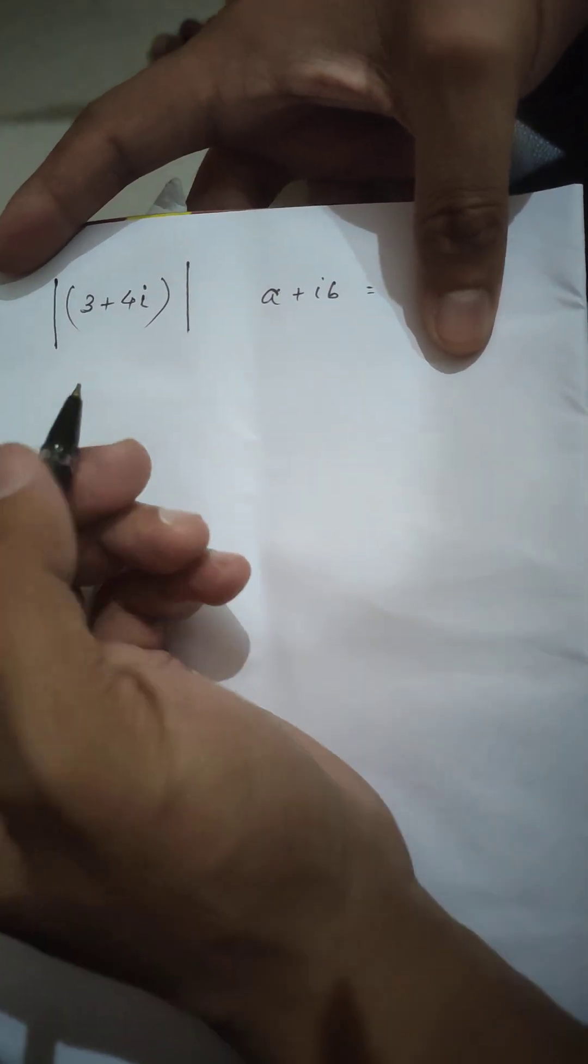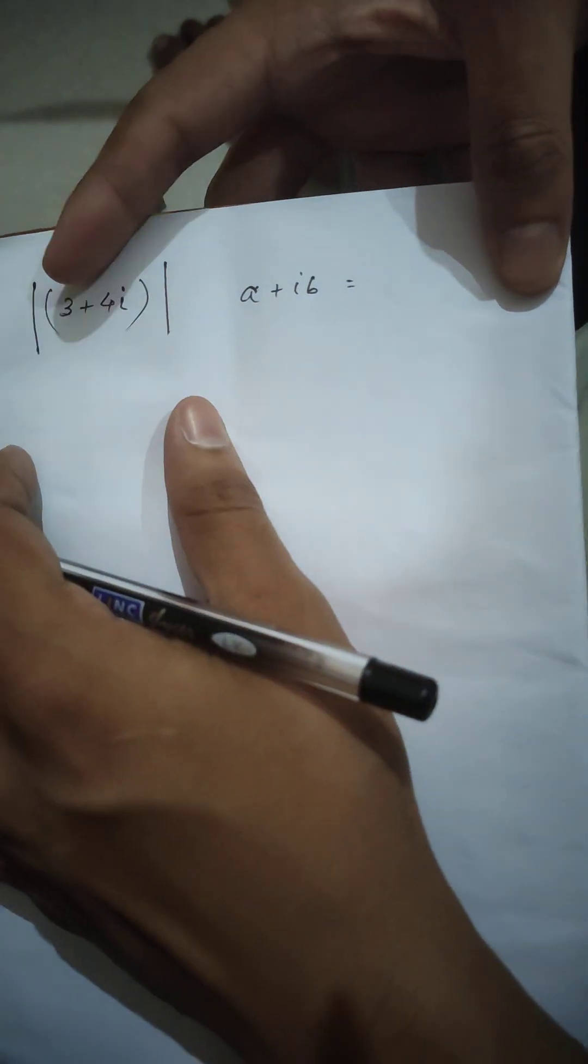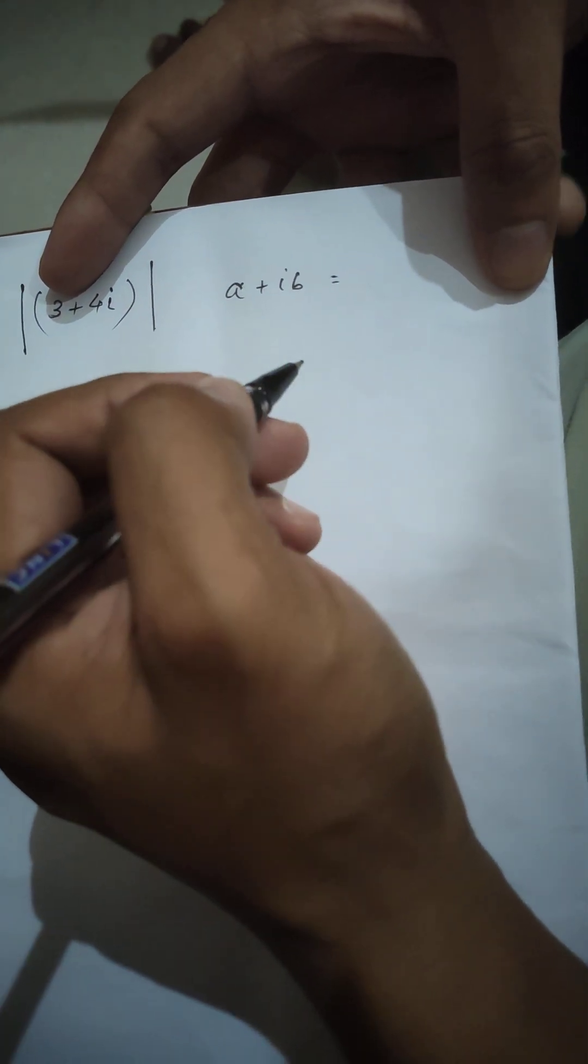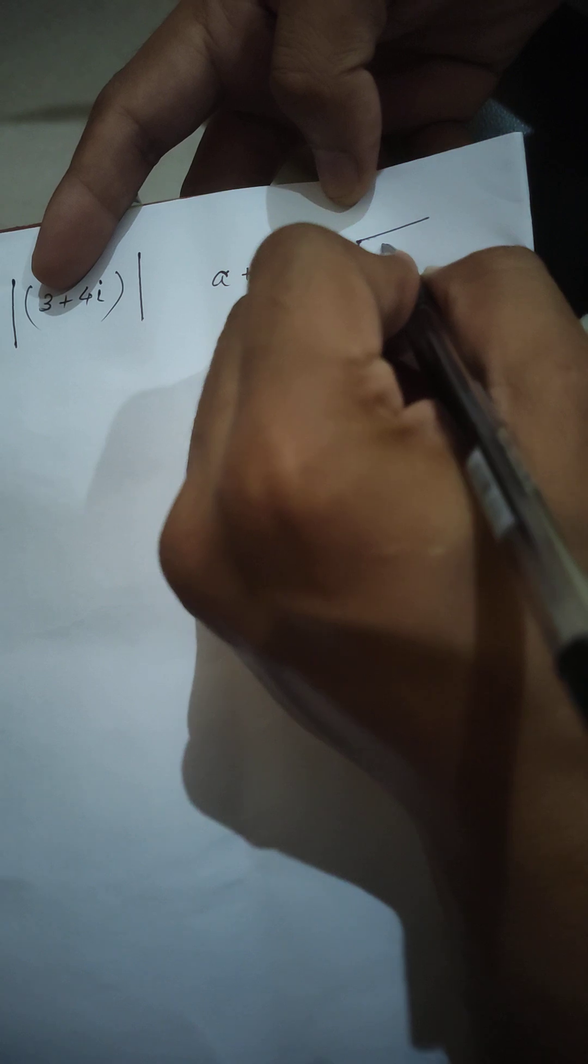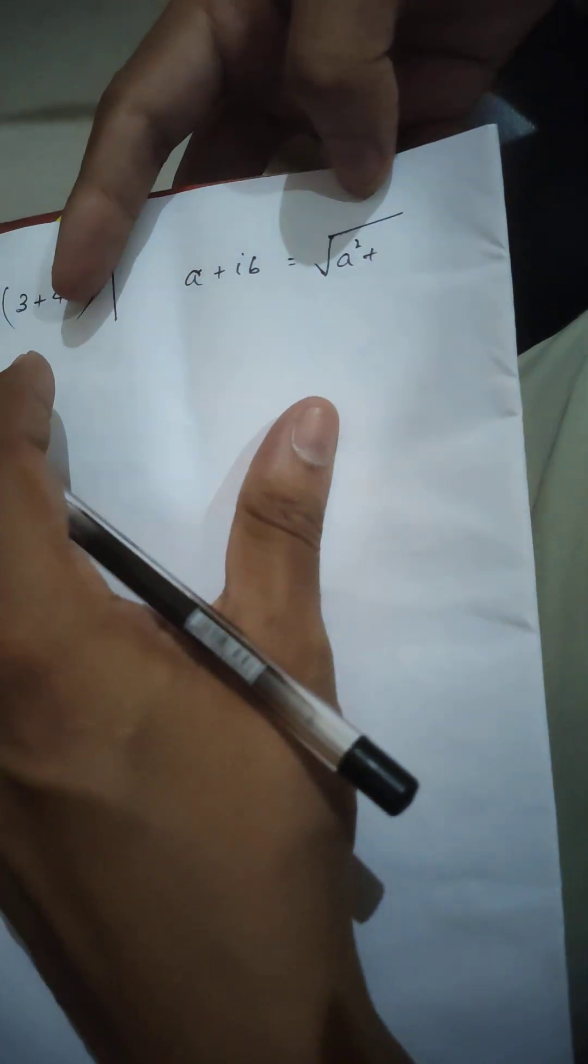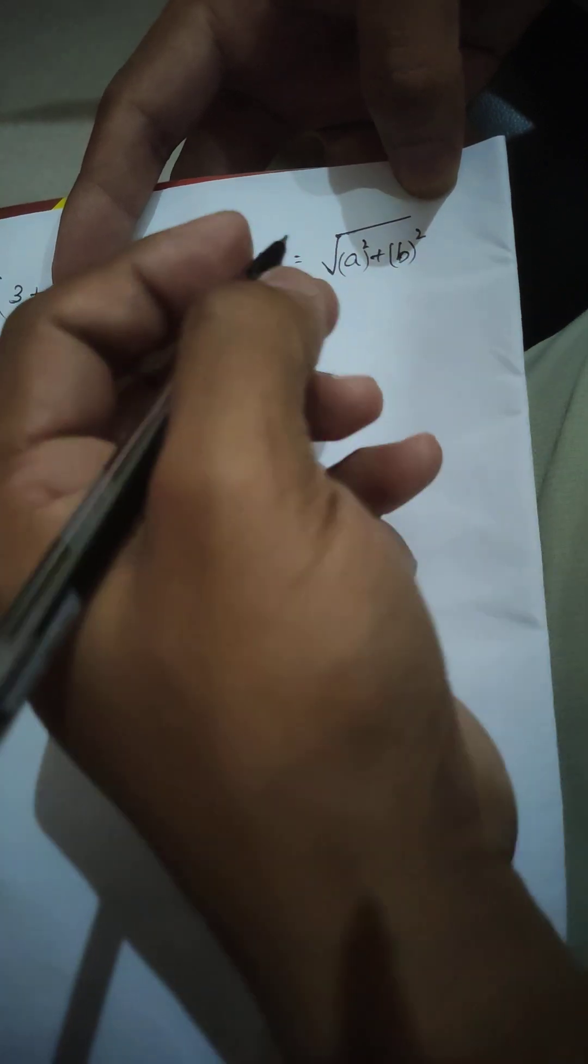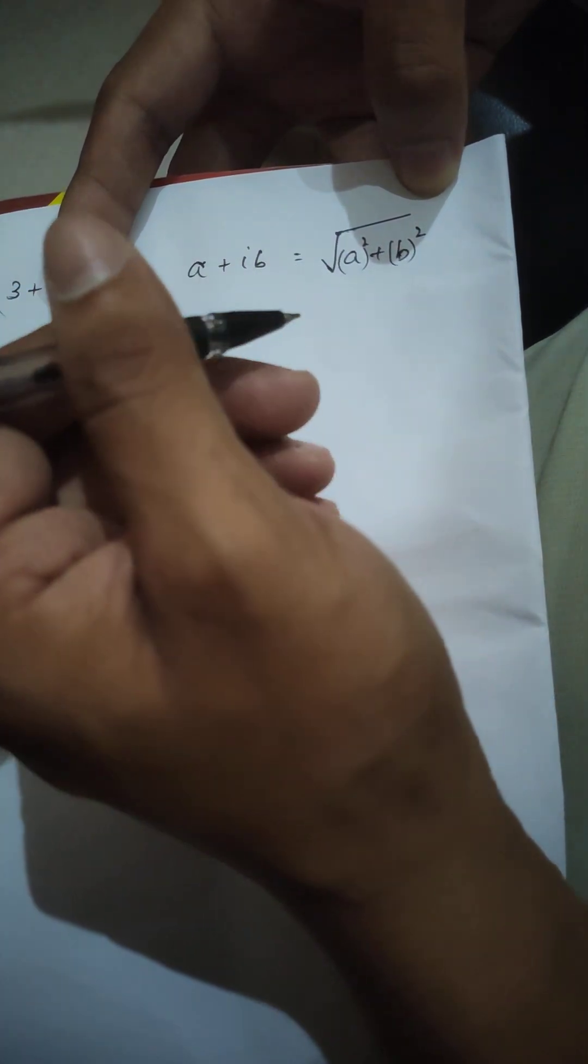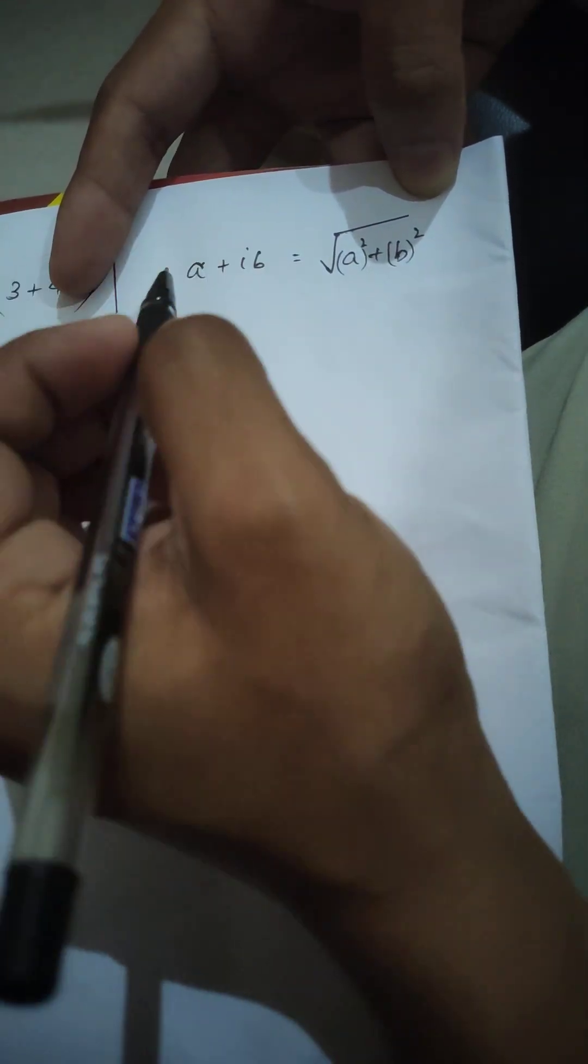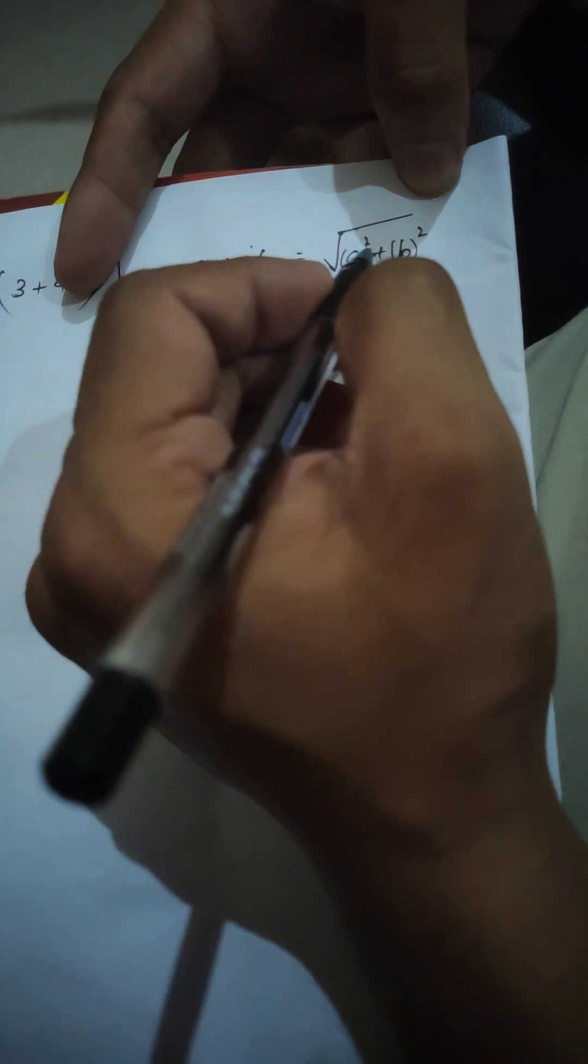So the formula for finding the modulus of any complex number is: if a number is a+ib, then its modulus is square root of the real part squared plus the imaginary part squared. Along with the sign, everything is positive so we don't have to worry. If any term were negative, it would eventually become positive after squaring.